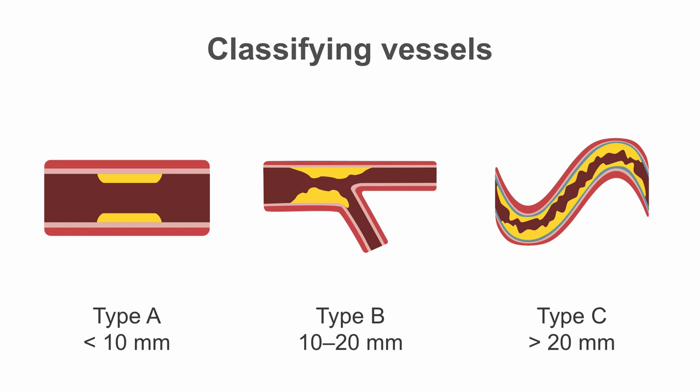Type A lesions, these are usually discrete and less than 10 mm in length. The disease tends to be smooth and in a non-angulated segment with little or no calcification, no major branches, and no associated thrombus. The lesion is usually easily accessible.